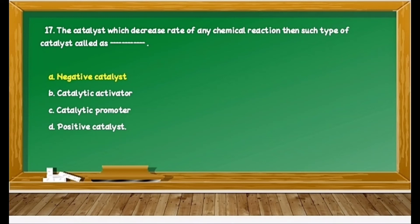Dear students, sometimes questions may be asked on industrial applications of catalysts, so you should also prepare this concept. In industrial applications, eight to nine different applications are present — how different chemicals are prepared, how different processes run, and which catalyst is used. For example, ammonia is manufactured using nitrogen and hydrogen; in this process, iron is used as a catalyst and molybdenum as a promoter. This whole process is called the Haber process. Such questions are again asked in your MSBT exam.